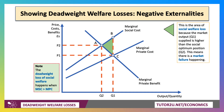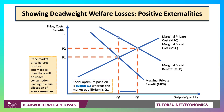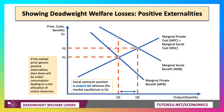Always best to label the deadweight loss of welfare on your diagram. For positive externalities, the marginal social benefit is greater than private benefit. And if the market ignores the externalities, there'll tend to be under-consumption.